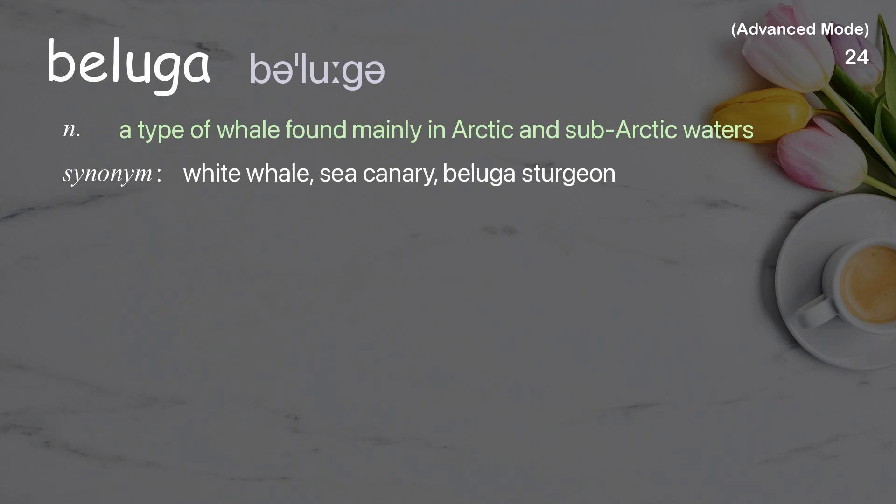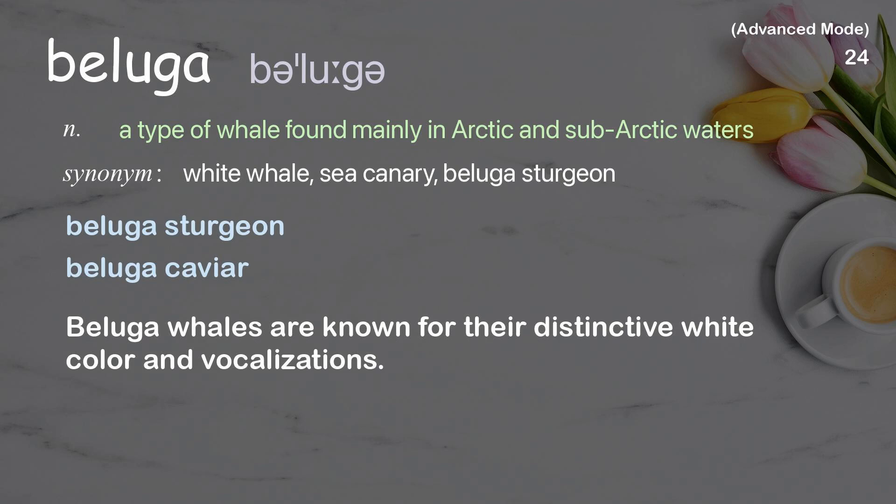Beluga. A type of whale found mainly in arctic and subarctic waters. Examples: beluga sturgeon, beluga caviar. Beluga whales are known for their distinctive white color and vocalizations.